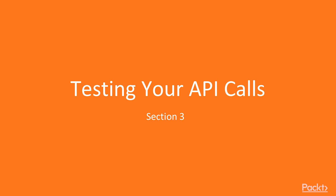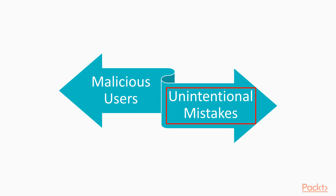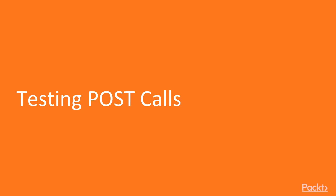Now we give API users the ability to modify something on our service, and we want to make sure they can't do so in a harmful way. There are two main ways people can harm our app through bad POST calls. The first is malicious users — we'll talk about security testing later in this course, though that's probably a full course in itself. The second is users accidentally doing the wrong thing, like sending data in the wrong format or trying to overwrite existing data. There are many things that could go wrong with POST calls, and in this video we're going to look at how we can test them.